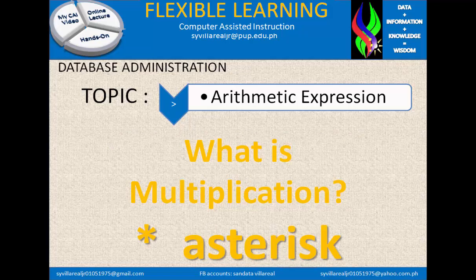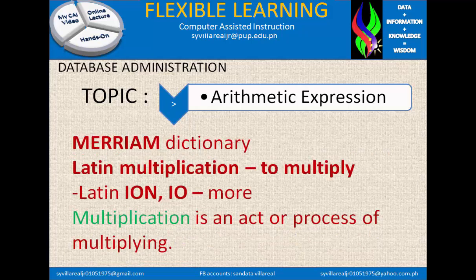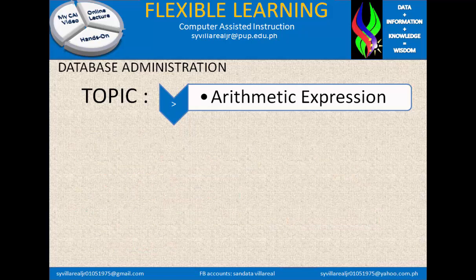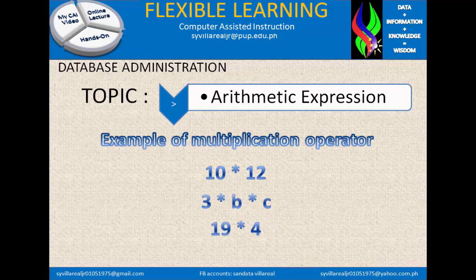Next is multiplication. What is multiplication? It uses the asterisk in computers. In the Oxford Dictionary, multiplication is the act or process of multiplying. In the Longman Dictionary, multiplication is the method of calculating in which you add a number to itself a particular number of times. In the Merriam Dictionary, multiplication came from the Latin word 'multiplicatio'. Examples of multiplication operator: 10 * 12, 3 * c, 19 * 4, and a * b.